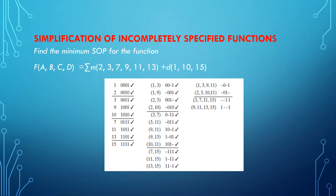We call them incompletely specified functions because you do not know what the value of those functions will be — they do not have any specified values. You can have the value be 0 or 1; no matter whatever value you assign, it is not going to make much difference. The output does not get altered with changes in input.